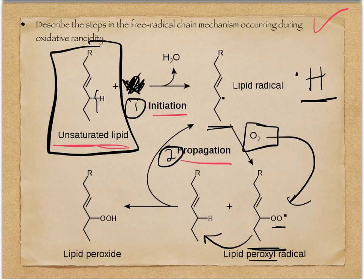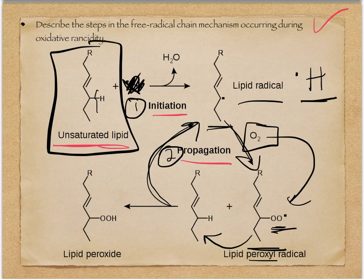Step two of propagation is that the peroxyl radical can react with another fatty acid, rip off that hydrogen, and then we're back making another lipid radical. Notice how this is a circular process: the lipid radical reacts with oxygen, makes the peroxyl radical, the peroxyl radical rips off a hydrogen, and we have another lipid radical. It can keep going around and around.